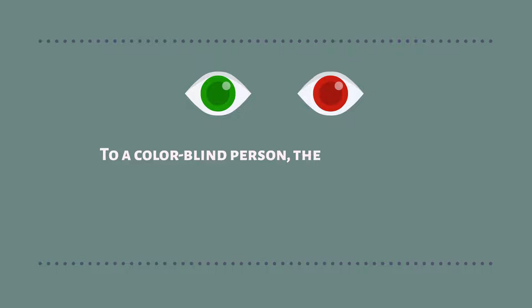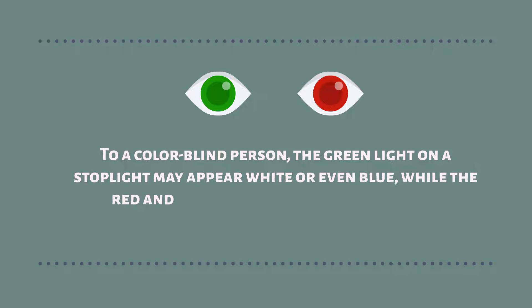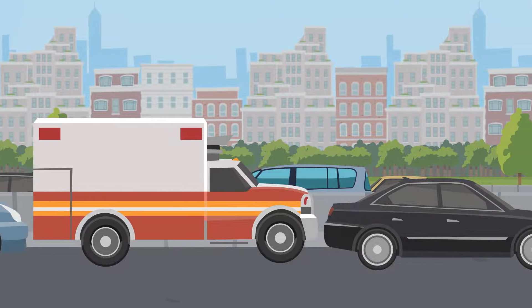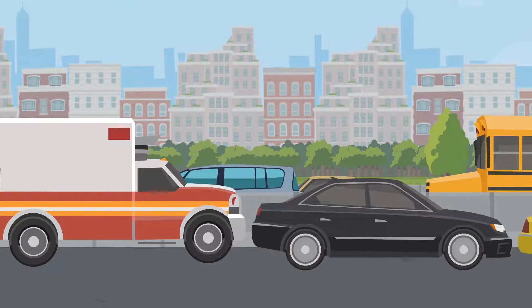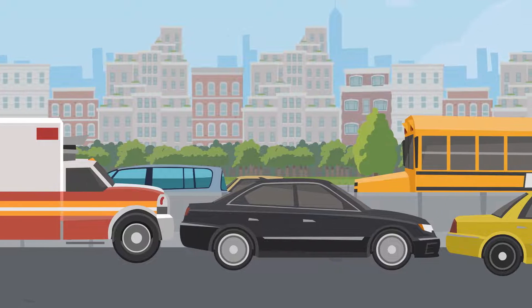To a colorblind person, the green light on a stoplight may appear white or even blue, while the red and yellow lights may look similar to each other. So, this is very dangerous, not only for the person itself, but also for others on the road.